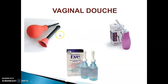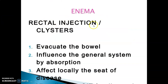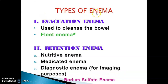Vaginal douches — some pictures related to vaginal douches are shown. Enema, also called rectal injection or clysters, is used to evacuate the bowel, influence the general system by absorption, and affect locally the seat of disease.